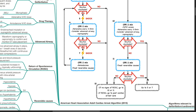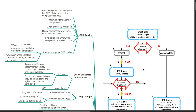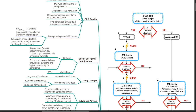The American Heart Association cardiac arrest algorithm 2015: ensure safety of the patient and yourself. Start CPR for a patient who is unresponsive with no signs of life; call for help and bring the defibrillator. Give oxygen and attach monitor or defibrillator. If the rhythm is shockable such as VF or pulseless VT, deliver shock. Biphasic shock energy follows manufacturer recommendation, typically 120 to 200 J; if unknown, use maximum available. Monophasic dose is 360 J. After the shock, provide CPR for 2 minutes and obtain IV or IO access.